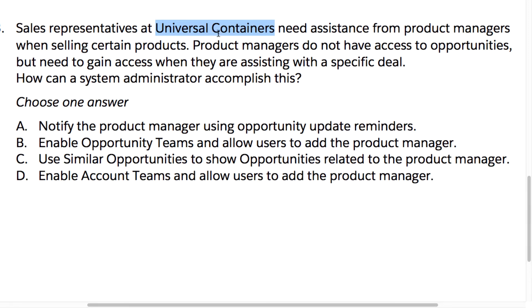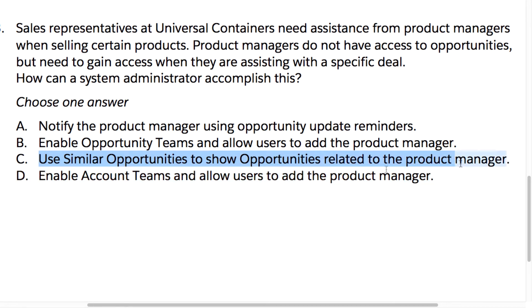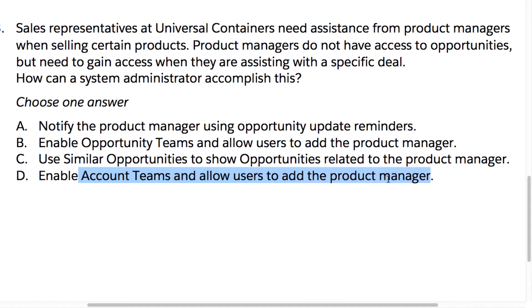We want to give product managers the ability to access opportunities when they're assisting with a specific deal. We need to choose one correct answer. The options are: A) notify the product manager using opportunity update reminders; B) enable opportunity teams and allow users to add the product manager; C) use similar opportunities to show opportunities related to the product manager; or D) enable account teams and allow users to add the product manager.